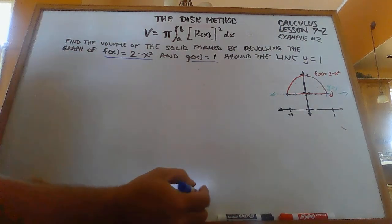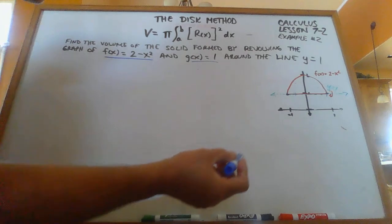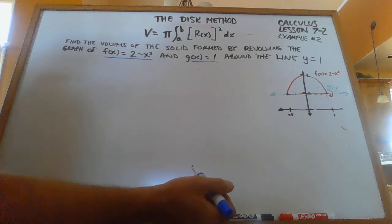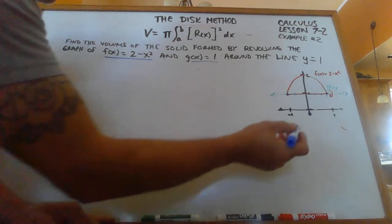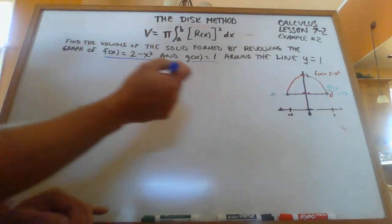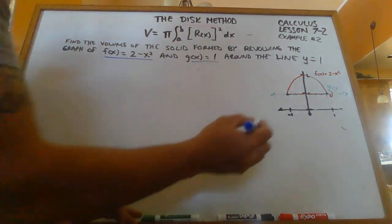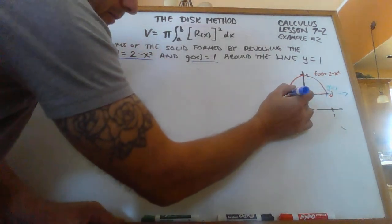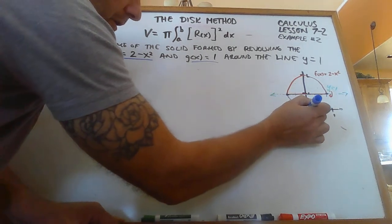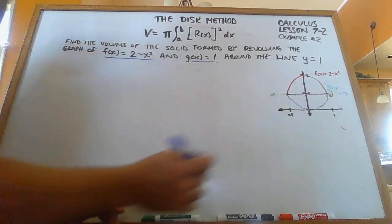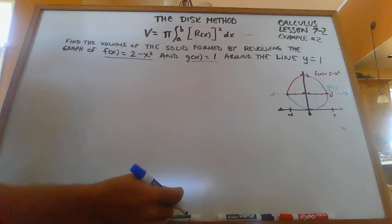So the difference between this one and the last one is the last one we rotated around the line y equals 0. And this one we've got a different rotating line. So we get this shape right here and we rotate it around the y equals 1. And we get kind of this oval shape like that.